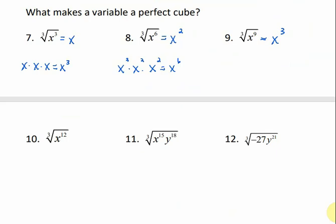For the cube root of x to the twelfth: 12 divided by 3 is 4. The cube root of x to the fifteenth times y to the eighteenth would be x to the fifth times y to the sixth. For the cube root of negative 27 x to the twenty-first: first, can we take the cube root of negative 27? Yes, because it's an odd root. What number can we multiply times itself three times to get negative 27? It would be negative 3. Then for the exponent, divide by 3: 21 divided by 3 is 7. So the answer is negative 3 x to the seventh.